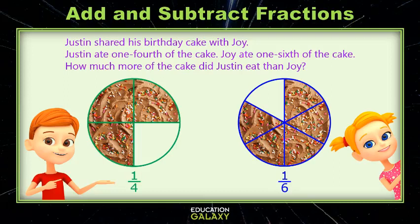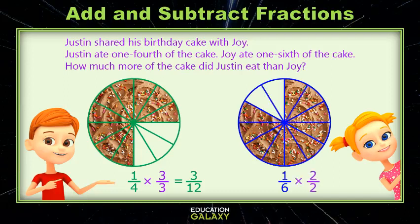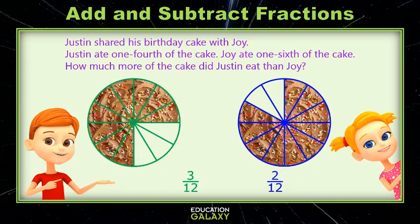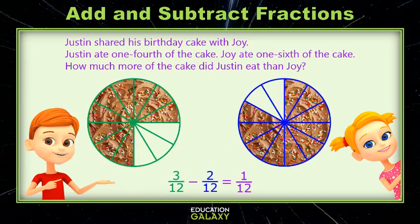On our cake that's currently 4's, if each of those 4's was made into 3 more pieces, then we would have 12 pieces, so now we have 3 twelfths. On the right we have 6, but if we multiply top and bottom by 2 we create 12 pieces, and now we have 2 twelfths that Joy ate. Now if we want to find out how much more Justin ate than Joy, we subtract the numerators and leave the denominators alone, and we find out that he ate 1 twelfth more.